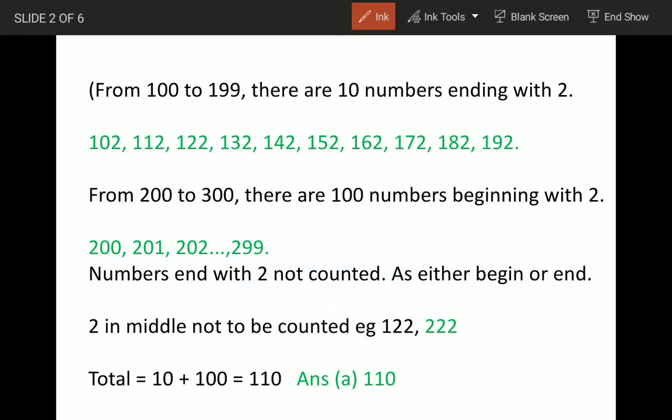Between 100 to 199, there are going to be 10 numbers ending with 2. These are listed here. Here in 122, this will be counted as only 1 because the 2 in the middle is not to be counted as per question.